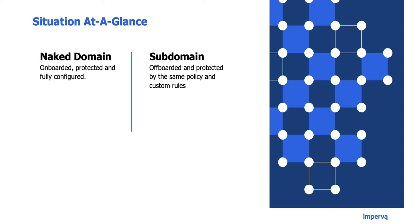The idea is that whenever we protect our onboarded main website that is under a naked domain, we get a chance to protect its subdomains as well without onboarding them to Imperva, as long as they all share the same IP address.